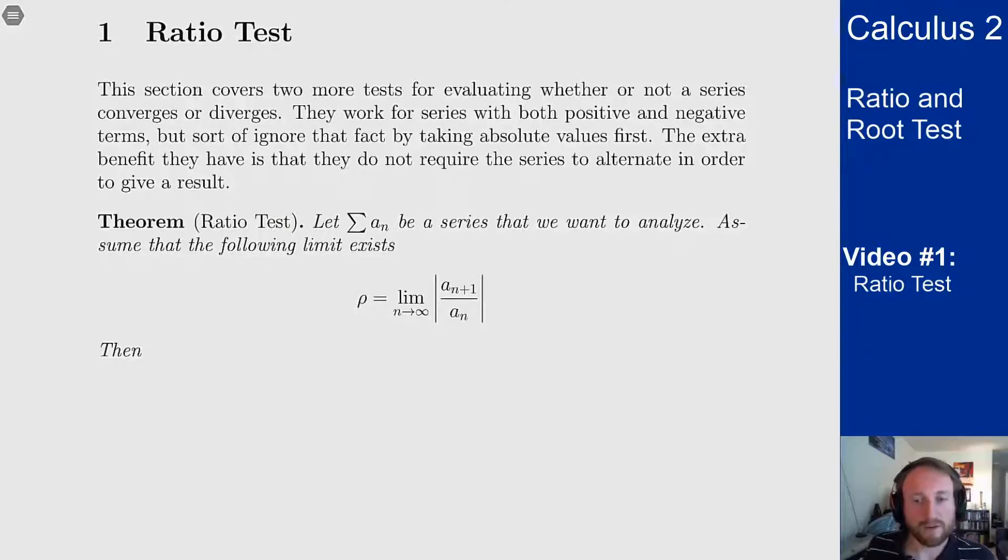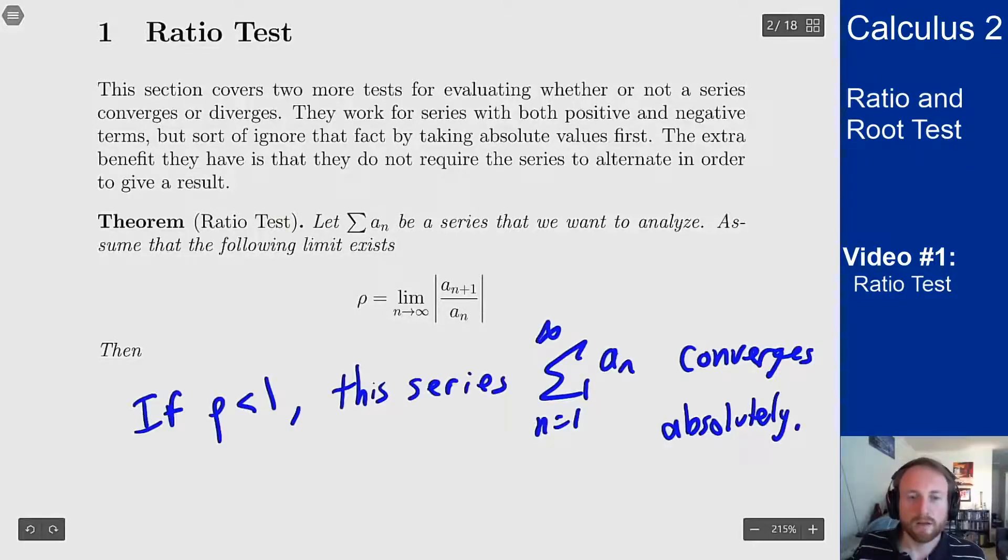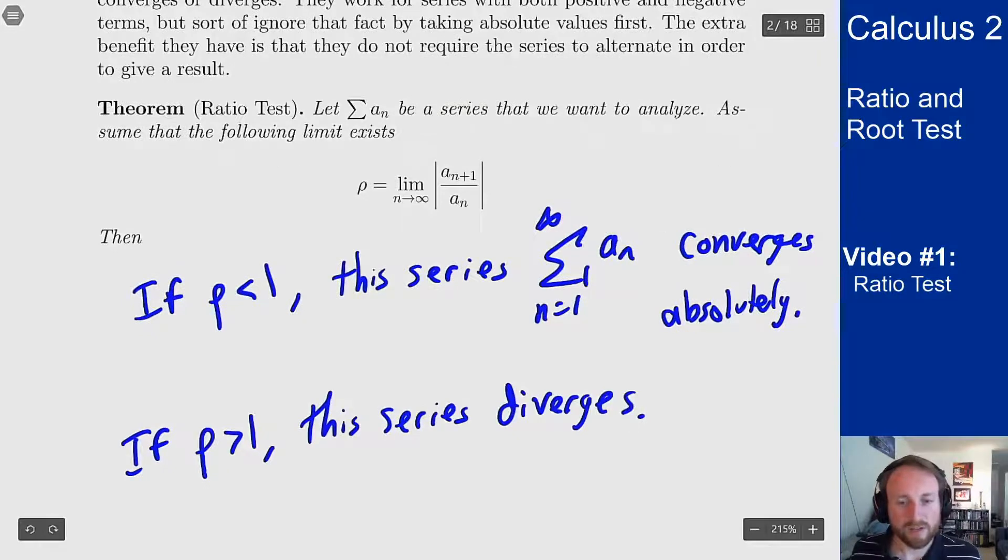So if rho is less than one then this series converges, absolutely. On the other hand if rho is bigger than one this series will diverge. And as a last result if rho equals one the test is inconclusive.